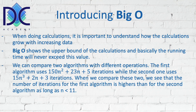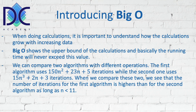When we look at two algorithms: the first has the relationship 150n² + 23n + 5, meaning the number of iterations to complete the algorithm can be calculated using this formula. The second algorithm has the relationship 15n³ + 2n + 3. When we compare the two in an Excel table and calculate the number of iterations, we see that the first algorithm has a higher value than the second up to n = 11.